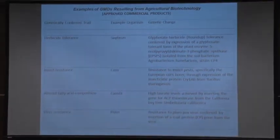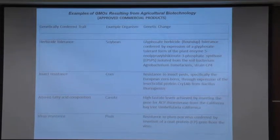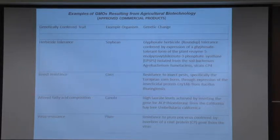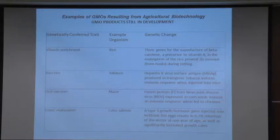Here are some GMO examples approved for commercial products resulting from agricultural biotechnology: herbicide tolerance and salt tolerance in soybean, insect resistance in corn, virus resistance in plum, altered fatty acid composition in canola. Additional examples include vitamin enrichment in golden rice, vaccines produced in tobacco, oral vaccines in maize, and faster maturation in coho salmon — some already approved for commercialization.